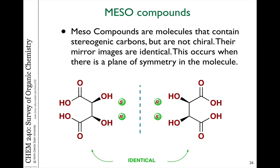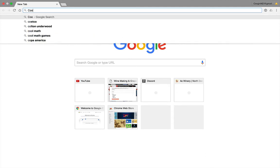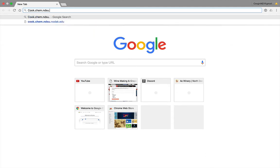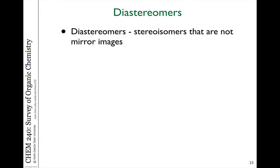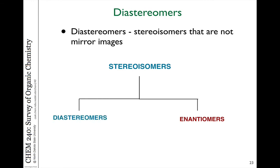These are molecules that contain stereogenic carbons, but they're not chiral because there's a plane of symmetry in the molecule. Hi, this is Dr. Cook, CHEM 240 instructor. In this video, we're going to take a look at diastereomers and determine how we can see the difference between cis and trans diastereomers or configurational diastereomers. Recall that stereoisomers are split into enantiomers and diastereomers.